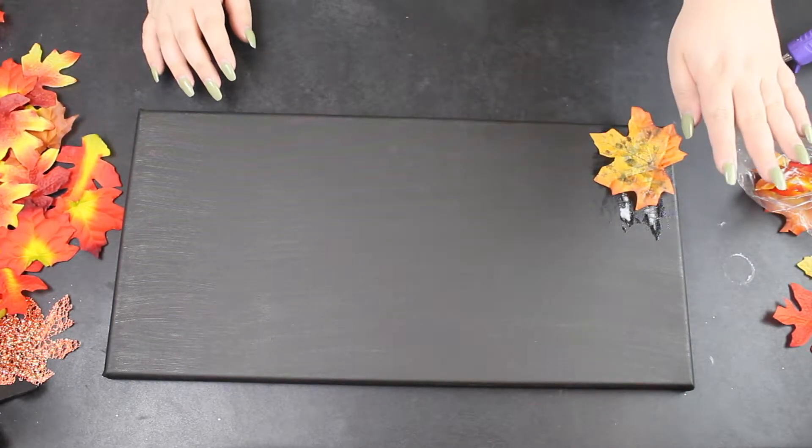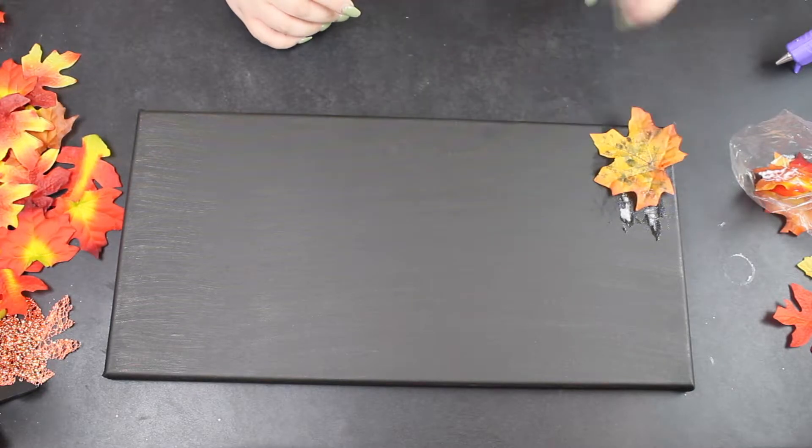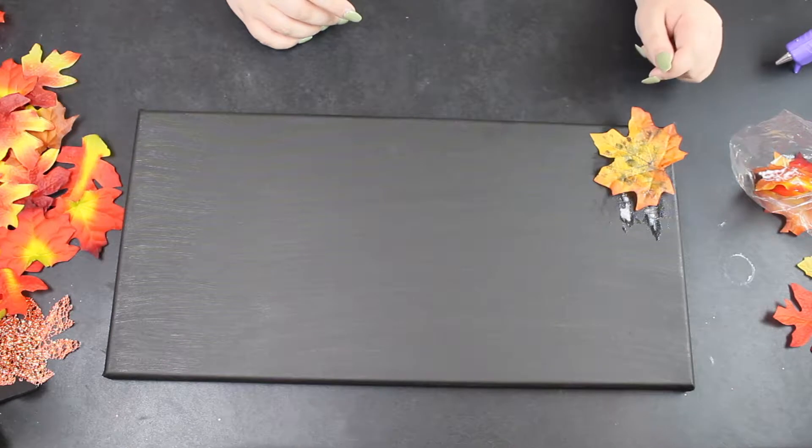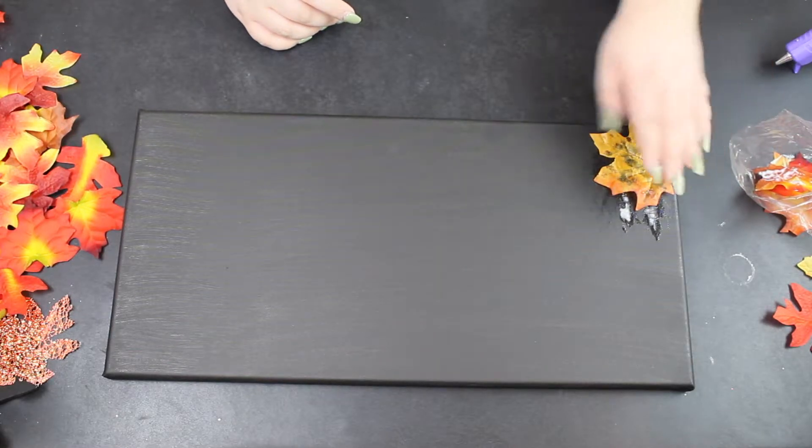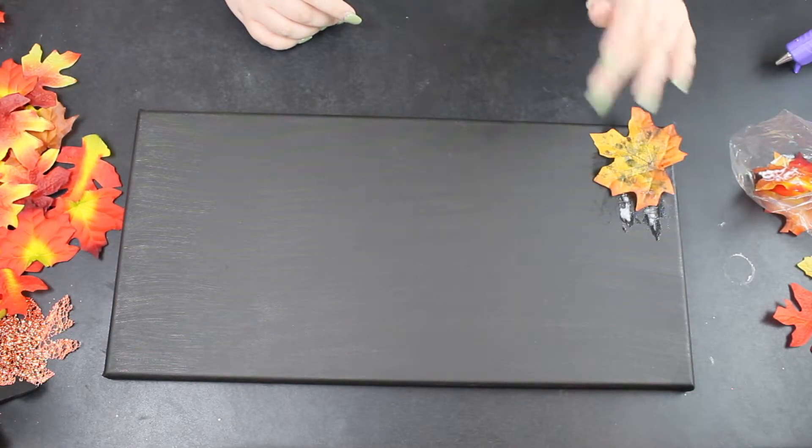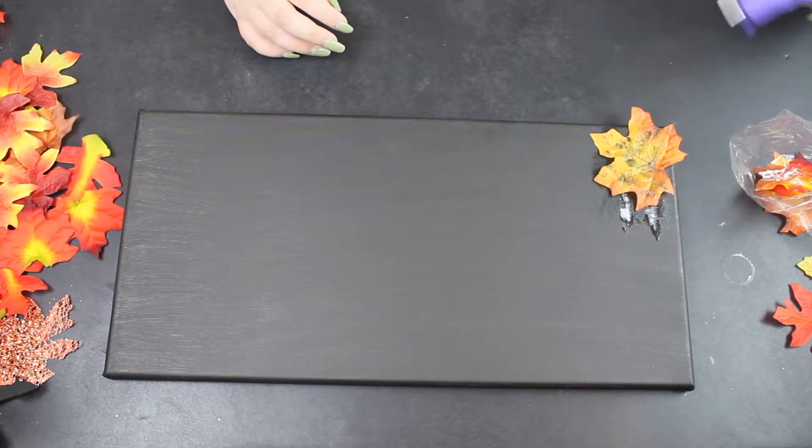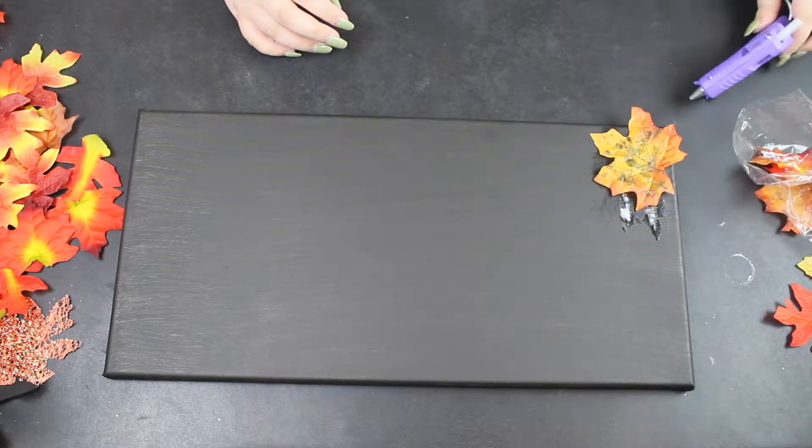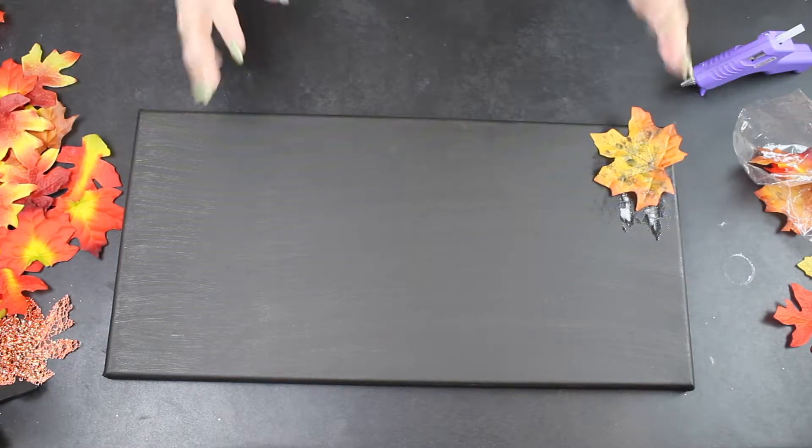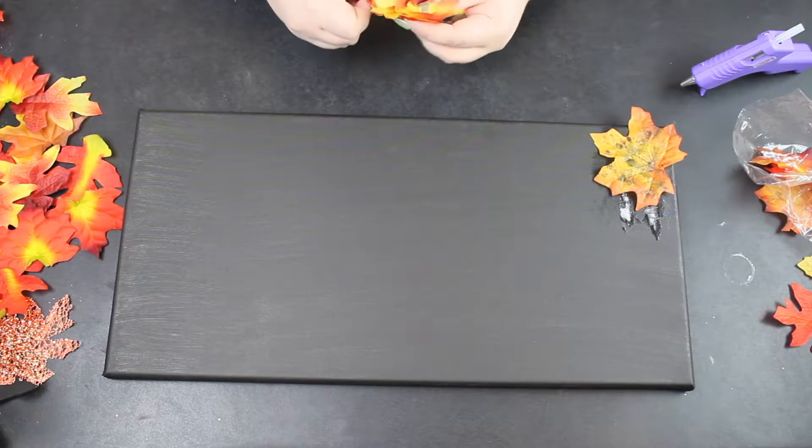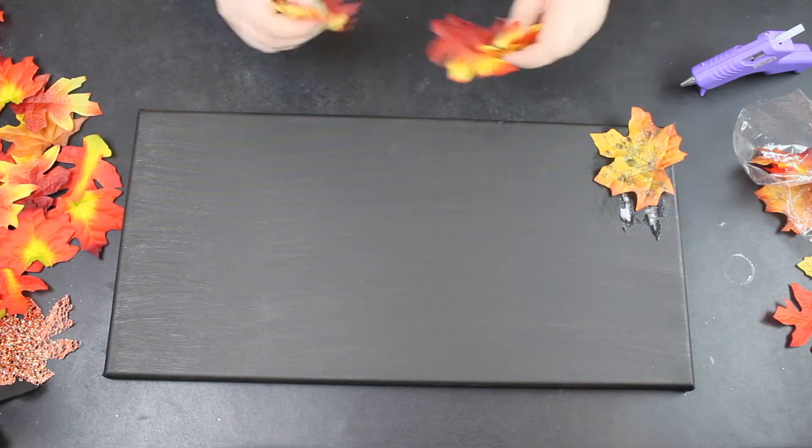Okay, so the Mod Podge didn't work and the Gorilla Glue didn't work. It did work eventually - this is the one that Mike did. It works if you hold it on for a while, but I didn't have time, so I decided to go out and buy a hot glue gun. So that is what I'm going to use instead. So now I'm just going to fast forward me putting on all these leaves, and then we will see the finished product.